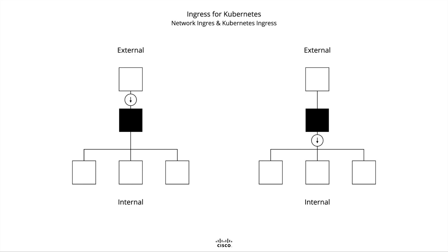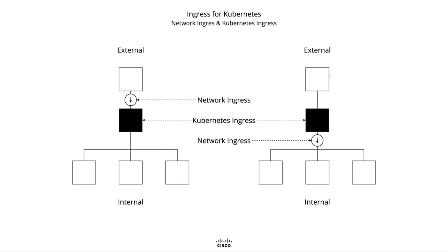Kubernetes Ingress is a proxy, an API gateway, that exposes multiple service providers as a single endpoint, therefore greatly simplifying consuming the services. Putting both together, Ingress for Kubernetes is a composition of network Ingress and Kubernetes Ingress, where network Ingress is the admission of traffic into the Kubernetes cluster, and Kubernetes Ingress is the routing of traffic within the Kubernetes cluster. In effect, Kubernetes Ingress is an API gateway.